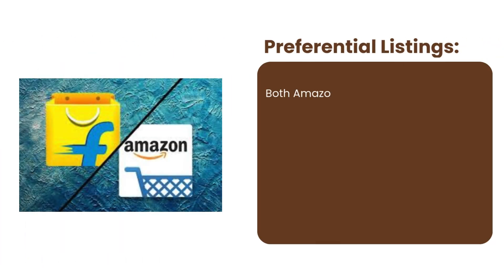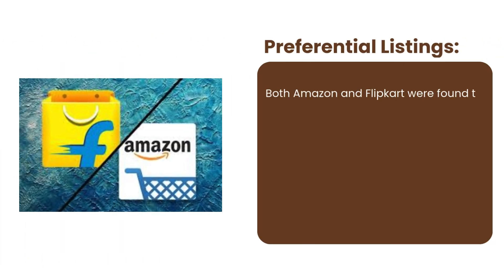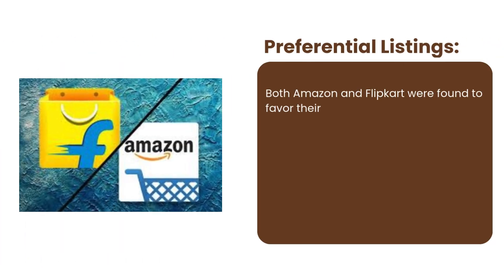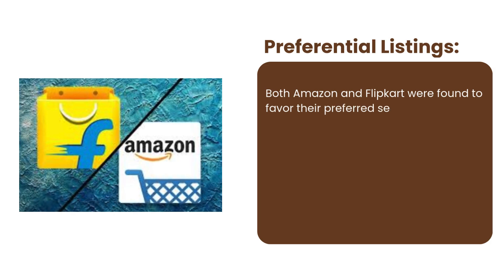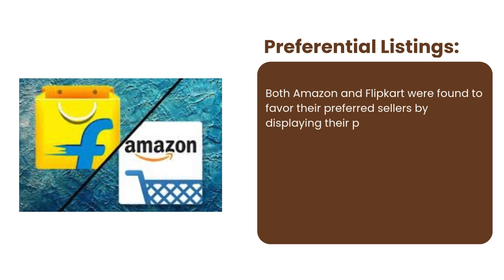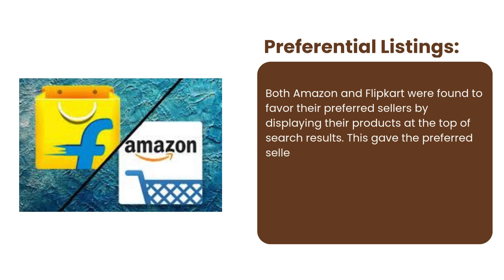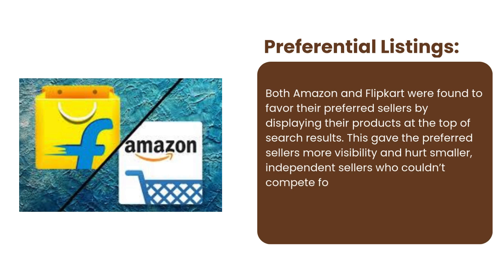Number two, preferential listings. Both Amazon and Flipkart were found to favor their preferred sellers by displaying their products at the top of search results. This gave the preferred sellers more visibility and hurt smaller independent sellers who couldn't compete for attention on these platforms.